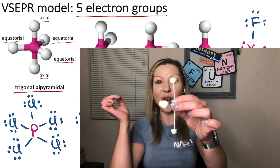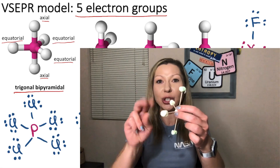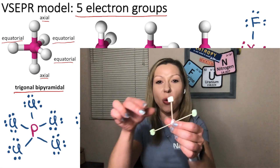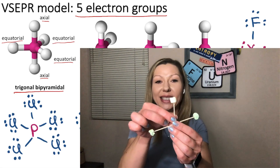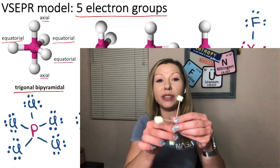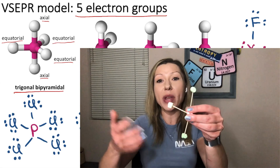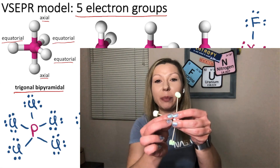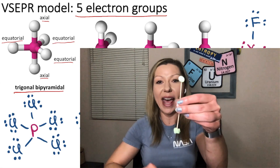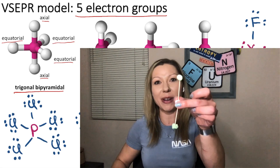Then if we have two lone pairs, we are going to get a T-shaped structure by removing one of the equatorial atoms. And when we have three lone electron pairs, we will remove the third equatorial atom and we are going to get a simple linear shape.